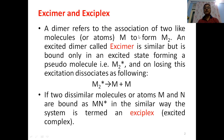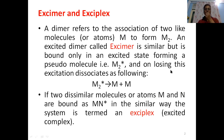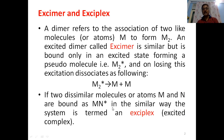A dimer refers to the association of two like molecules or atoms. But if we have the association of two dissimilar molecules or atoms, we have a laser called the exciplex — that is, excited complex. M and N come together to form MN, or in the excited state, MN*.